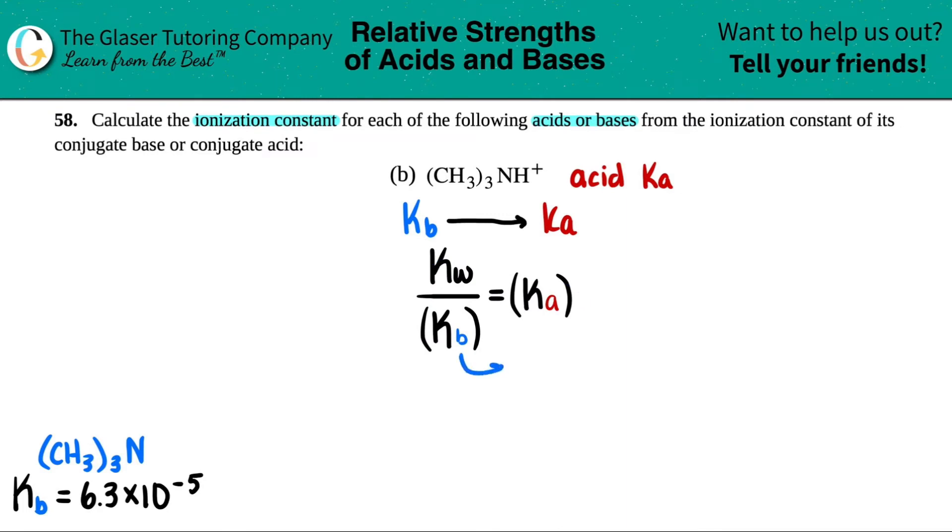So we found the KB value of 6.3 times 10 to the negative fifth. And since we pulled this KB value from the back of a textbook, that means we were at room temp. So that means we should know the Kw value. This probably has to be memorized. This is the ionization constant of water, W for water. And that's 1.0 times 10 to the negative 14th. So let's just plug in these numbers.